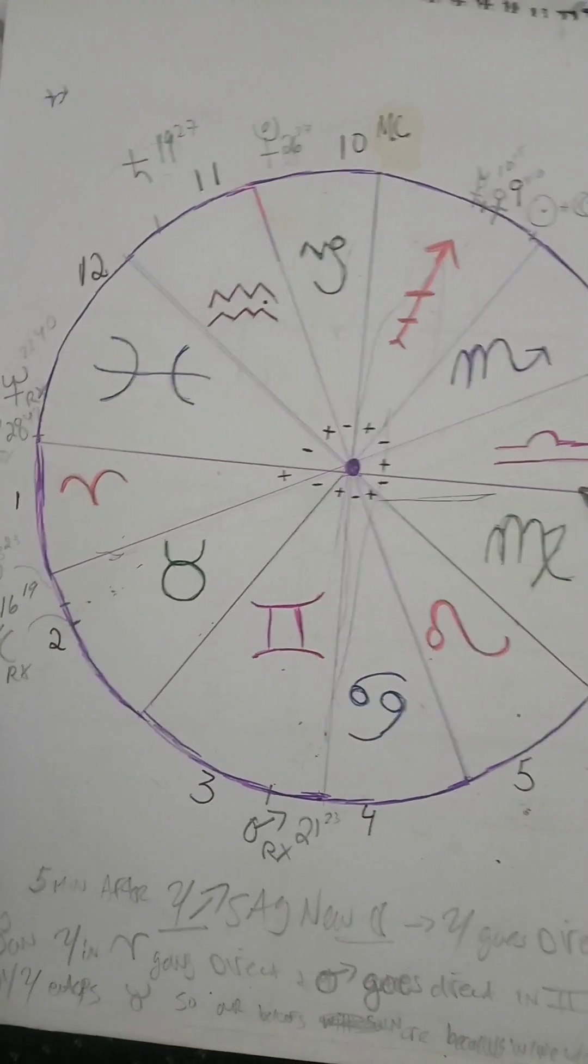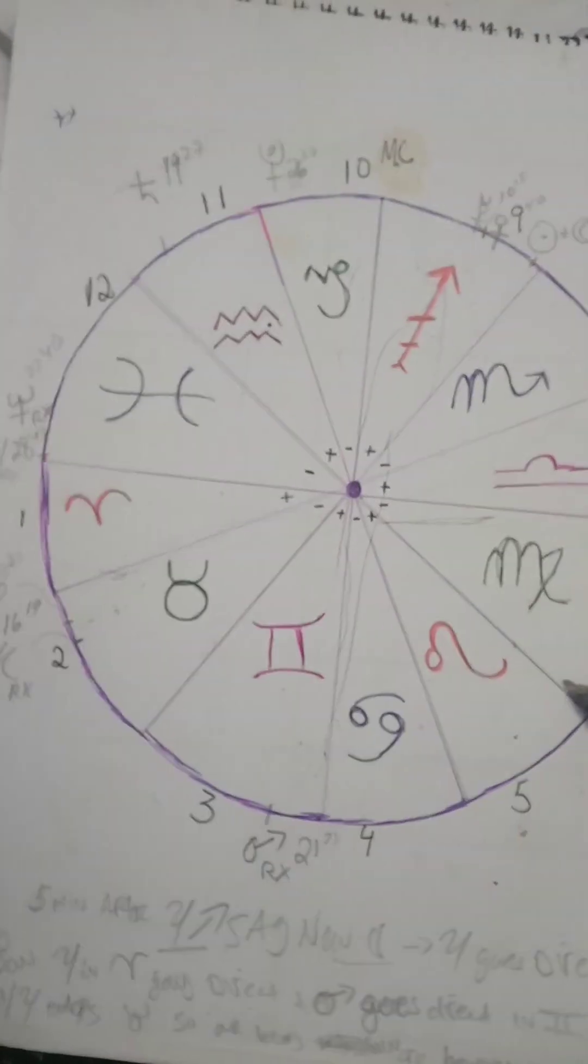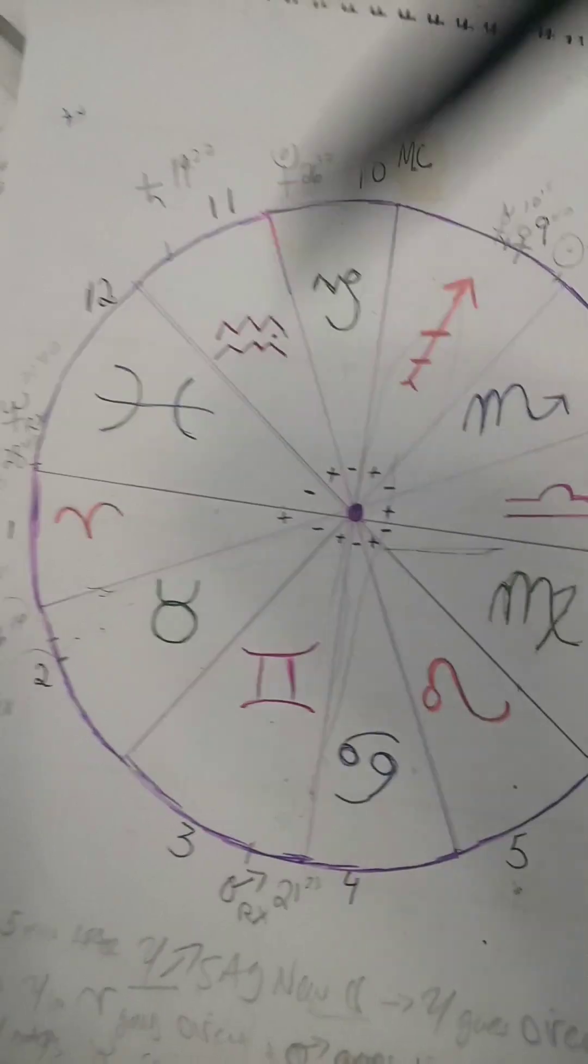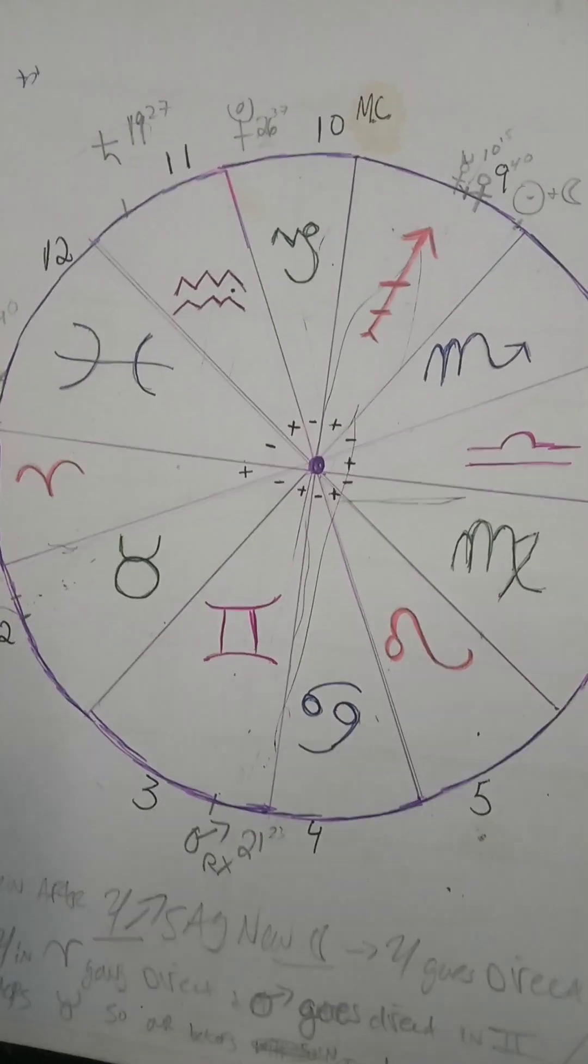For instance, I have Black Moon Lilith at a quincunx angle hitting my ascendant. So I was choking around my umbilical cord.